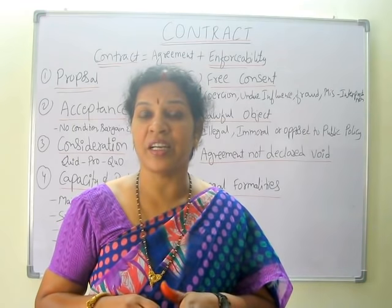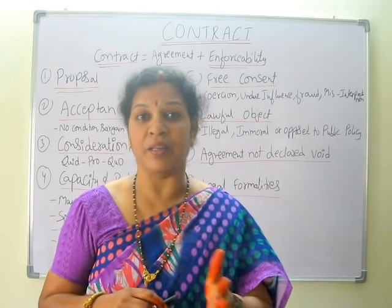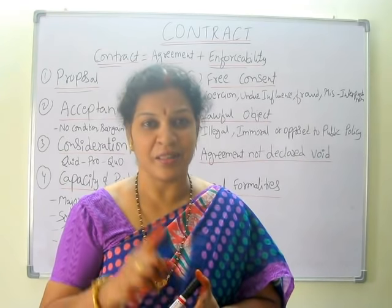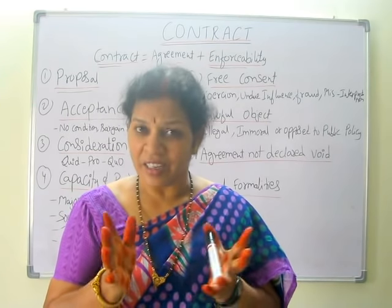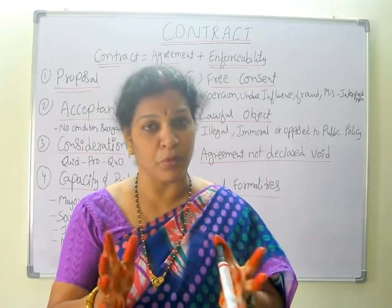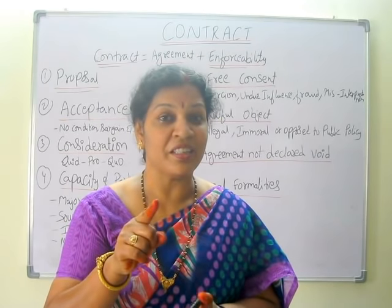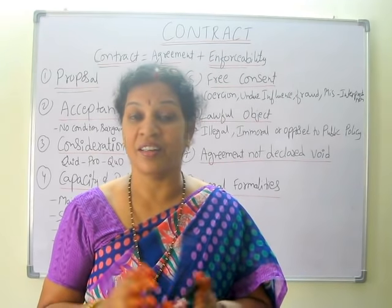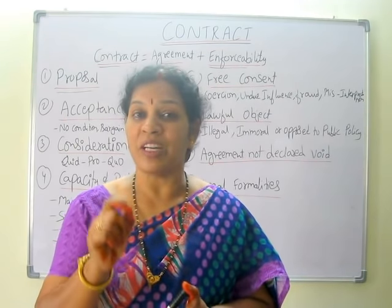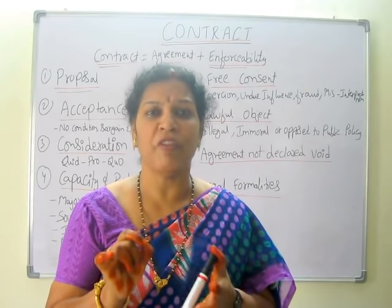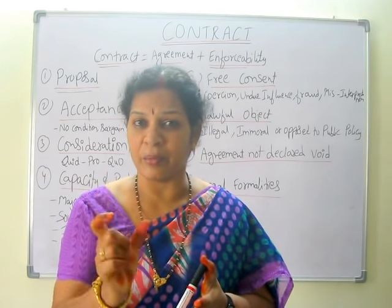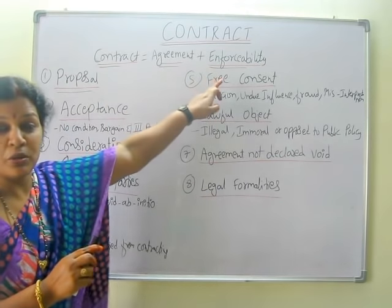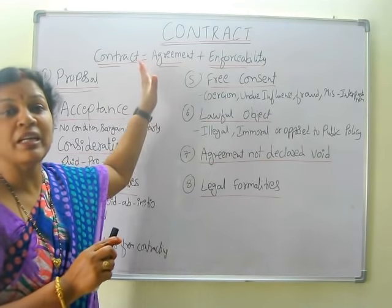Suppose A is saying to another party B, to go and break the head of C. It is a murder. Agreement is there — proposal, proposee, both are there. But it cannot be enforced into the court of law because it is illegal. So that will not become a contract. The simple formula is: contract means agreement plus enforceable into the court of law. Both together make a contract.